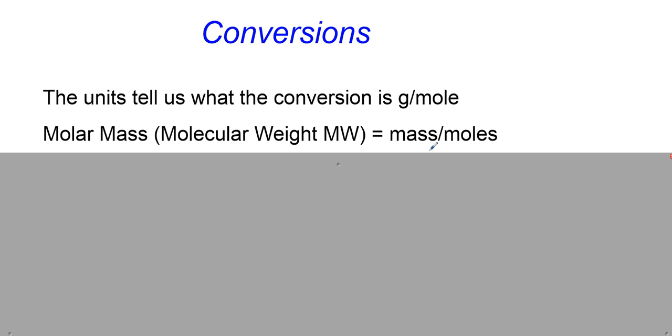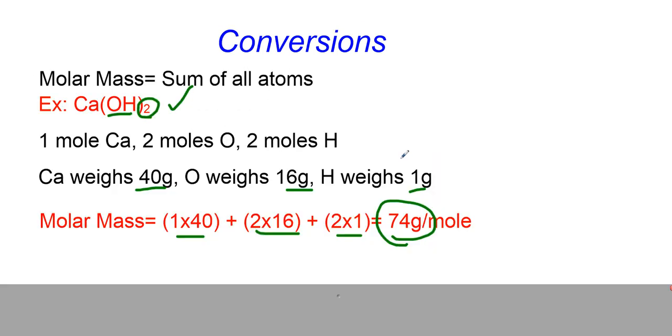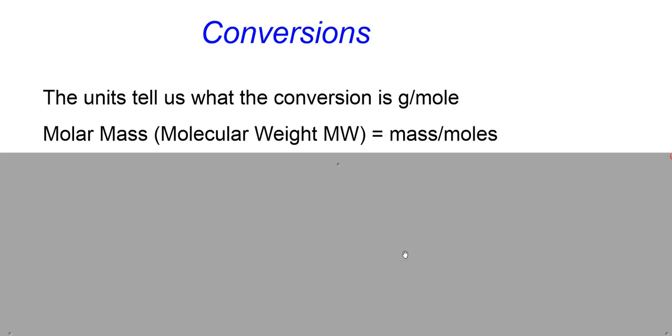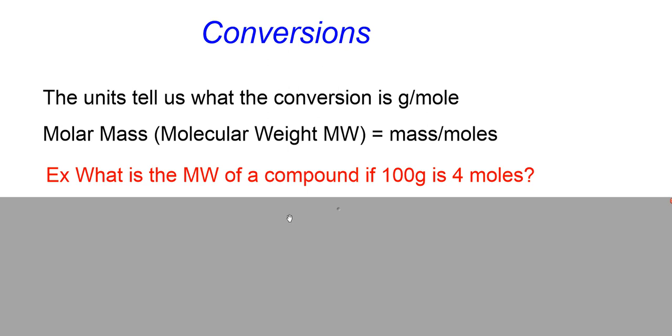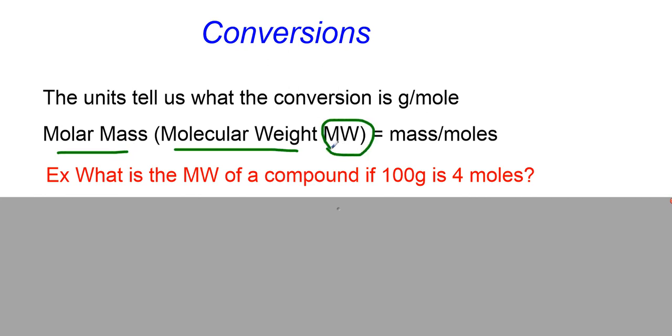So for calcium hydroxide, you saw that the mass was 74 grams, and that would be for one mole. Now suppose we had a problem where we had a different amount of moles. So what is the molecular weight? Again, I'm using molecular weight here in the same way that I would say molar mass. The two are the same, and you can use the abbreviation MW for that.